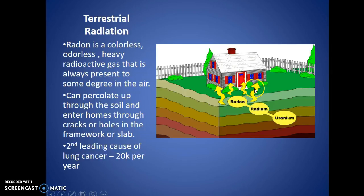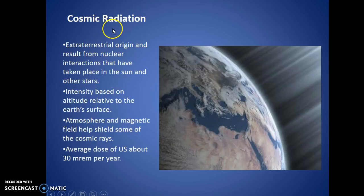Radon is very hard to detect, though there are radon sensors nowadays integrated with smoke detectors to check if any is seeping in. Radon is the second leading cause of lung cancer at about 20,000 deaths per year — a significant amount. The first leading cause is cigarettes. Cosmic radiation comes from extraterrestrial origin — basically from the sun and other stars. Intensity is based on altitude, so if you live in Denver, the Mile High City, you're closer to cosmic radiation and get a little more exposure.